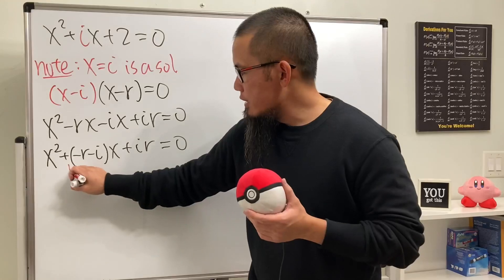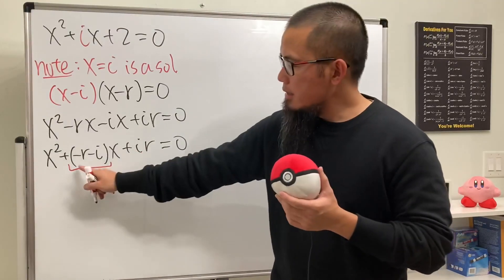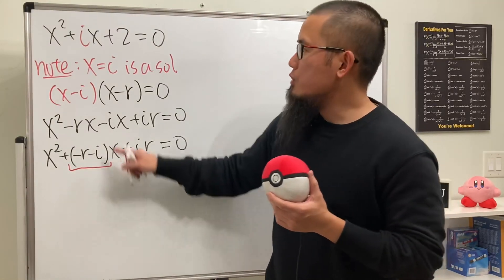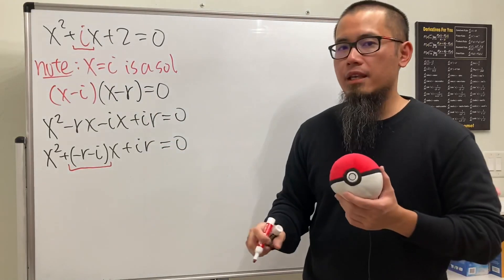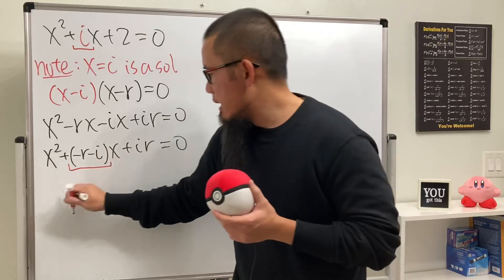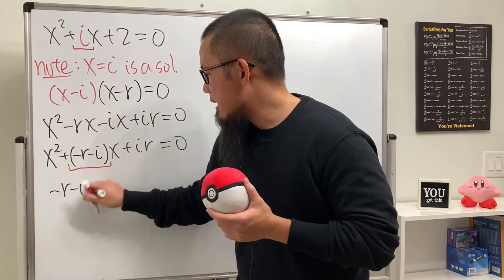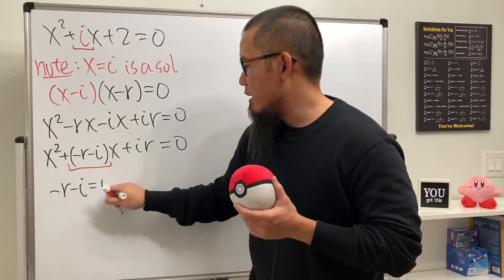If you use this right here, this is the coefficient for x. If you go back to the original, we know we want to end up with i. So that means negative r minus i has to equal that i. Just do your usual business, add the i on both sides, we get negative r equals 2i.